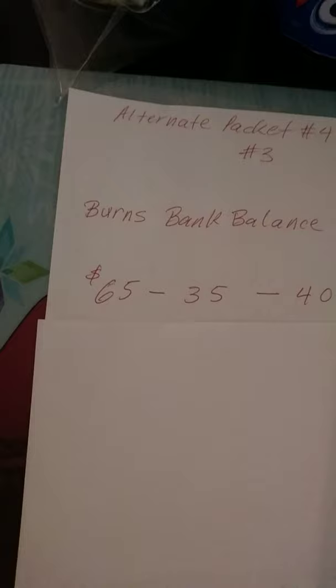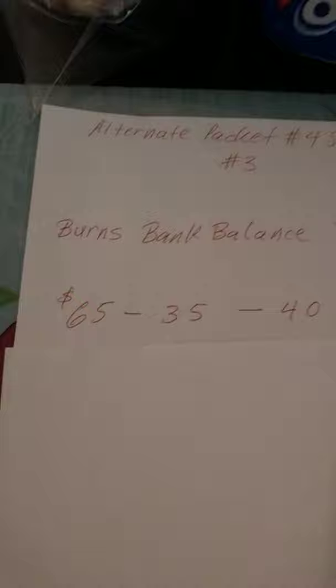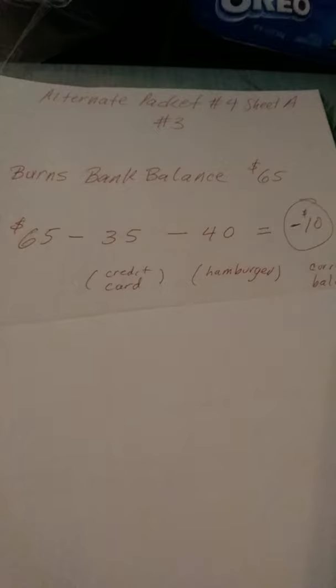If you do that on your calculator, I'll give you a second to do that or to think about it. You get negative $10. $65 minus $35 minus $40 equals negative $10. $35 was for a credit card, $40 was for a hamburger, and that gives you the current balance of negative $10.